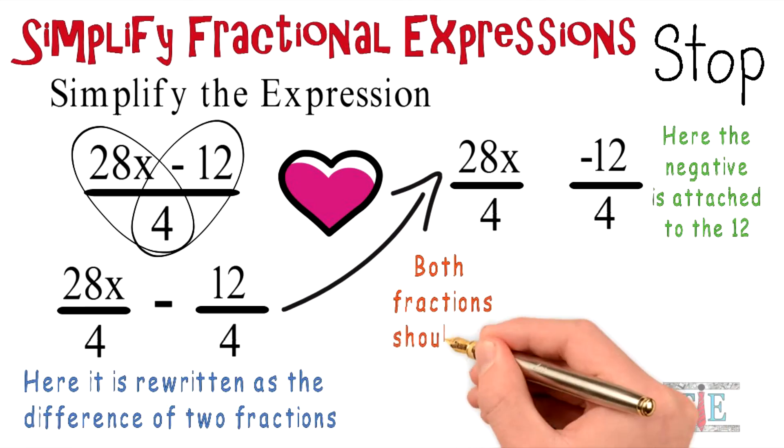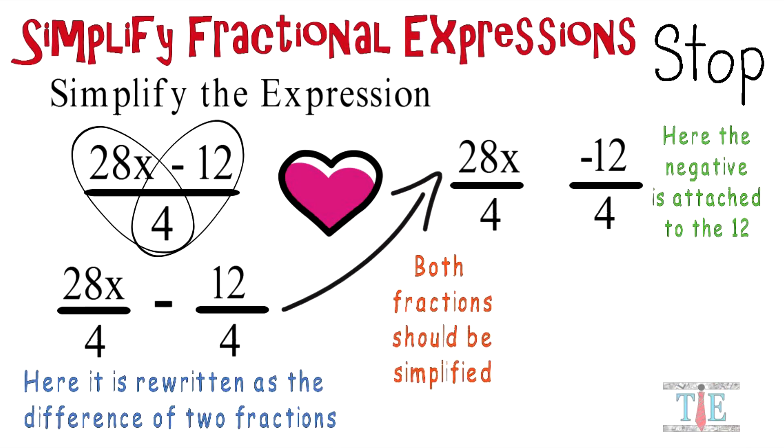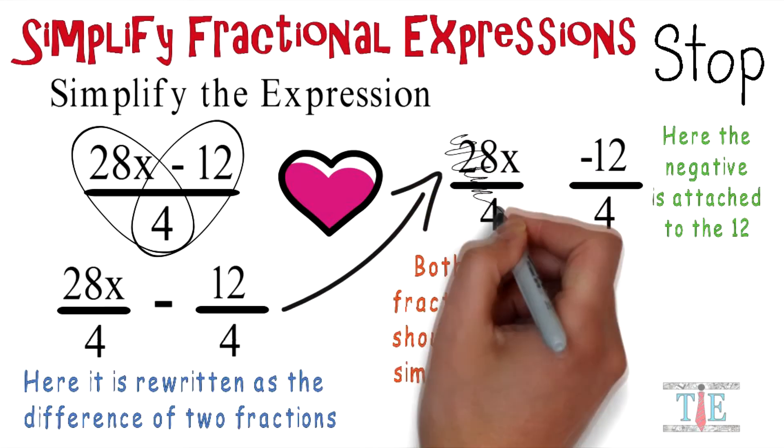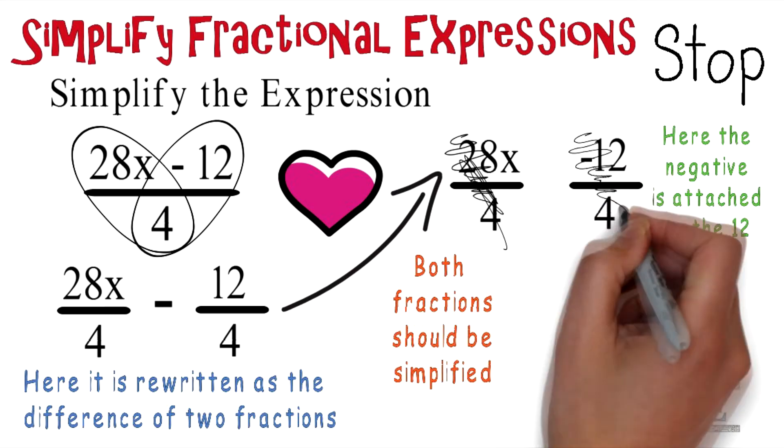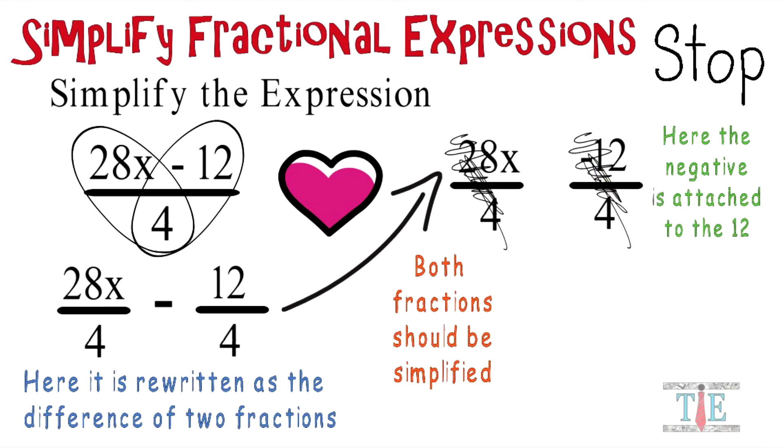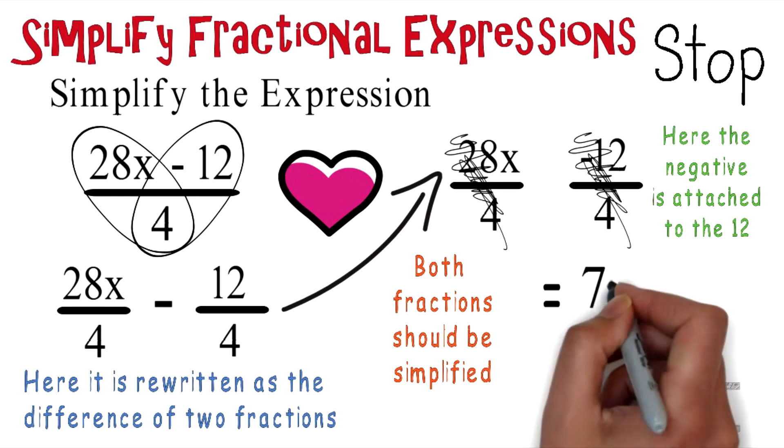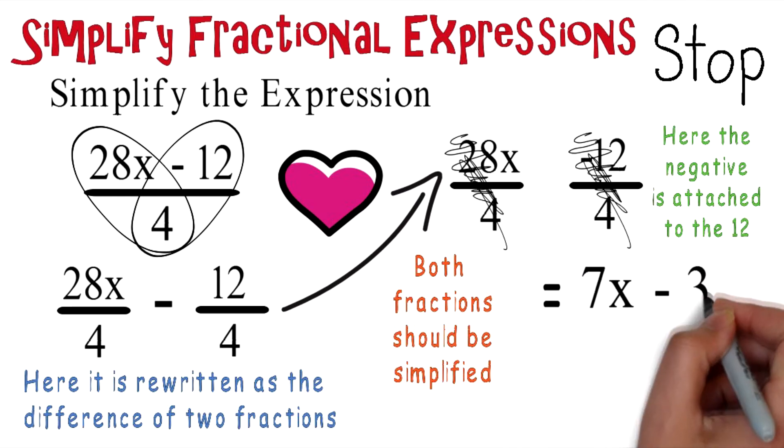Nevertheless, both fractions should be simplified. So 28 divided by 4 can be simplified and negative 12 over 4 can also be simplified, in which case you get 7x minus 3.